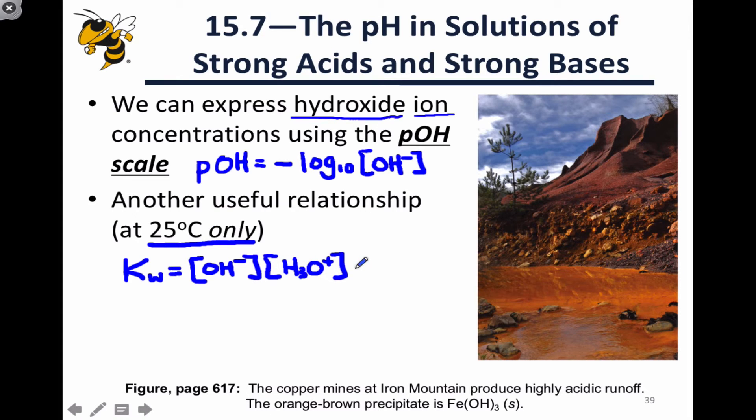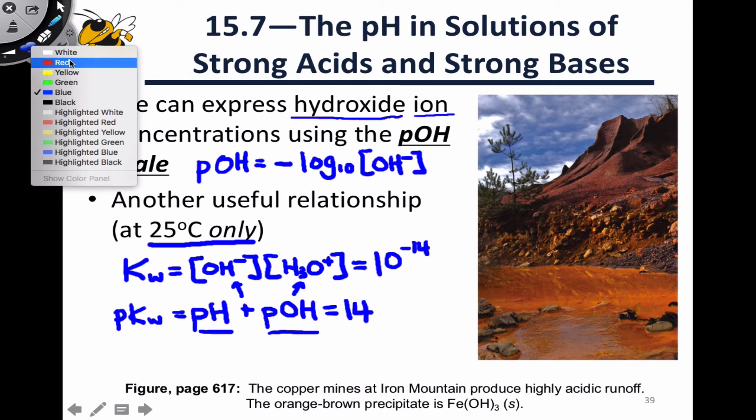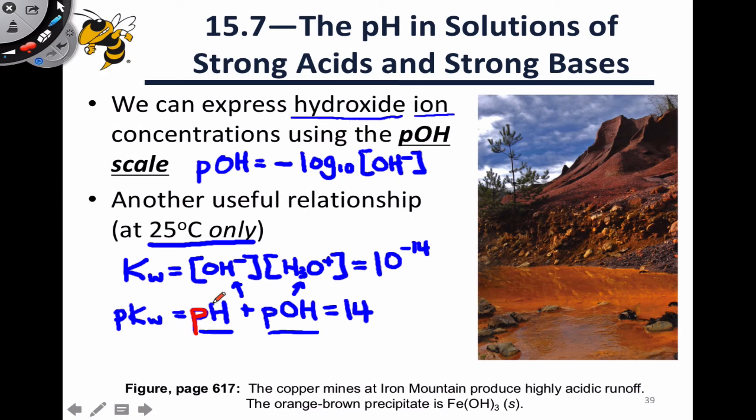If I apply the p operator to both sides of this, I get pKw is equal to pH plus pOH, since the logarithm of a product is equal to the sum of the separate logarithms. Kw at 25 degrees C is 10 to the negative 14, so pKw is equal to 14, and we can thus write that pH plus pOH is always equal to 14.